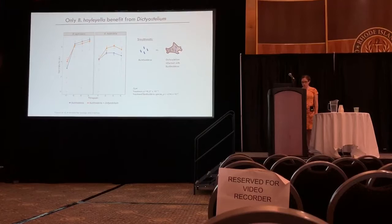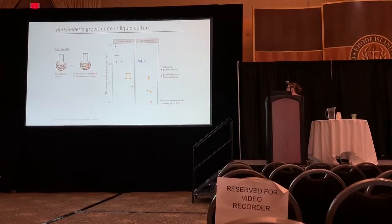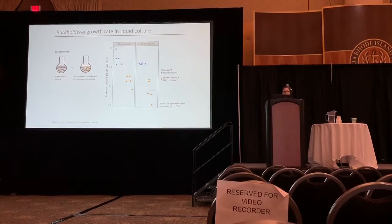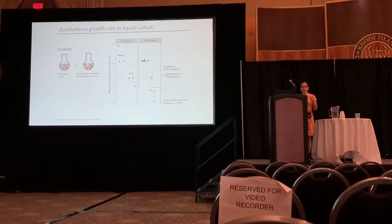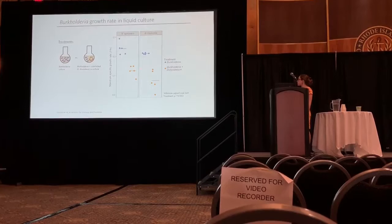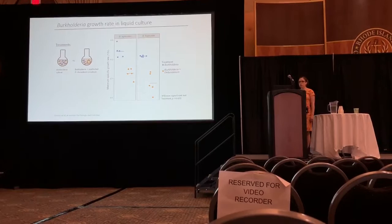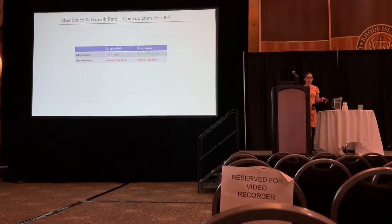I also looked at growth rate with a similar set of treatments — Burkholderia alone or Burkholderia with uninfected Dictyostelium, keeping it uninfected so as not to add extra Burkholderia or confound a host or symbiont effect. Maximum specific growth rate is a derivation of doubling time. When Burkholderia is by itself it has a much faster growth rate, and it's suppressed for both species when the host is around. So that brings up the question: the second species benefited from higher population size but its growth rate was suppressed by the host — how does that make sense?